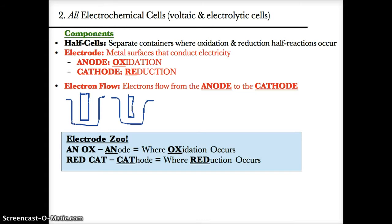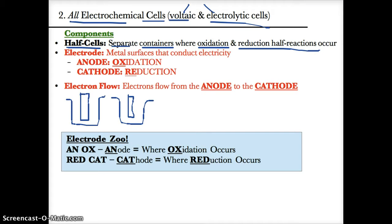Before getting into voltaic cells, let's talk about all electrochemical cells — these facts apply to both voltaic and electrolytic cells. In all electrochemical cells, you usually have two half cells: separate containers or beakers where oxidation and reduction half reactions occur — oxidation in one beaker and reduction in another.